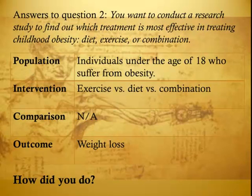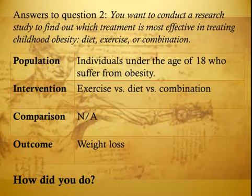Answers to Question 2. Population: Individuals under the age of 18 who suffer from obesity. Intervention: Here we have three interventions — exercise, diet, or a combination of the two. For comparison, there is none, because we do not have a control group here. Outcome: Weight loss. How did you do?